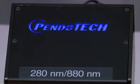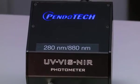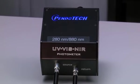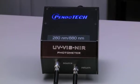For applications where a turbidity measurement at 880 nanometers and a second measurement such as absorbance at 280 nanometers is desired from one flow cell, there is a dual wavelength photometer available. It measures both values at the same time. This unit has two analog outputs, one dedicated to each wavelength measurement.